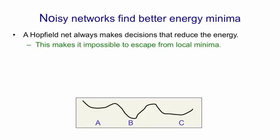If you look at the landscape here, if we get into the local minimum A there's no way we're going to get over the energy barrier to get to the better minimum B, because we can't go uphill in energy.